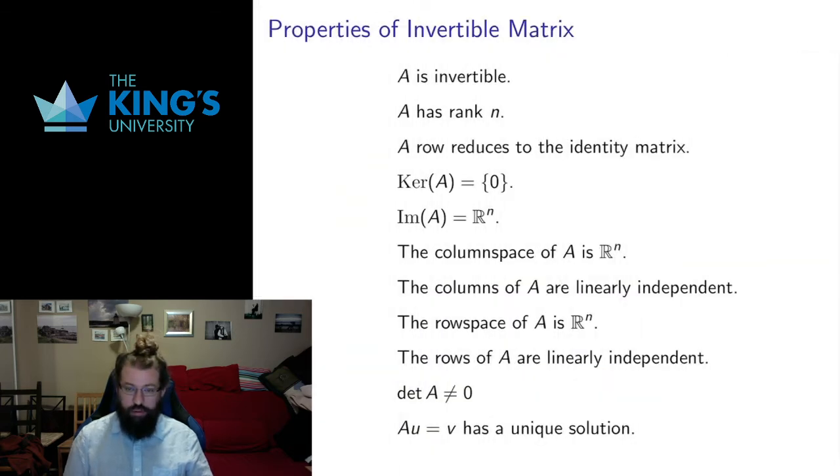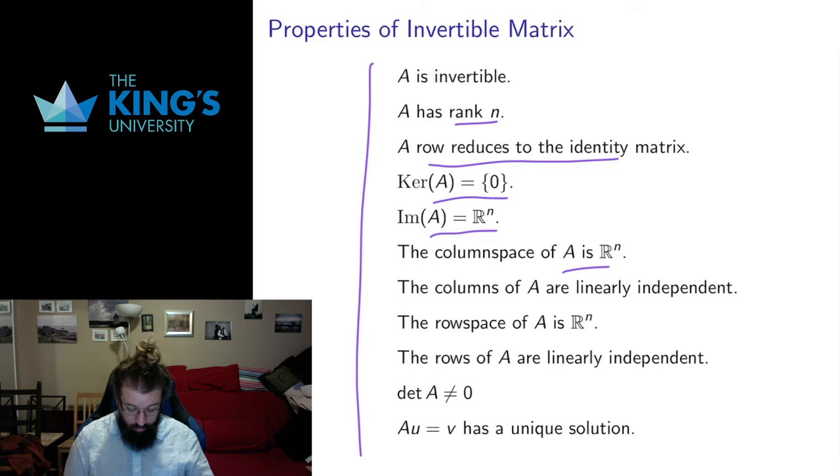This brings us back to the discussion of properties of invertible matrices. So if I have a matrix, all of the things on this page are in fact equivalent to the matrix being invertible. So whether it has rank n, whether it row reduces to the identity, whether its kernel is 0, whether its image is R^n, whether its column space or its row space is R^n, whether its columns or its rows are linearly independent, whether its determinant is non-zero, whether the system AU equals V has a unique solution whenever I know V and I'm solving for U.